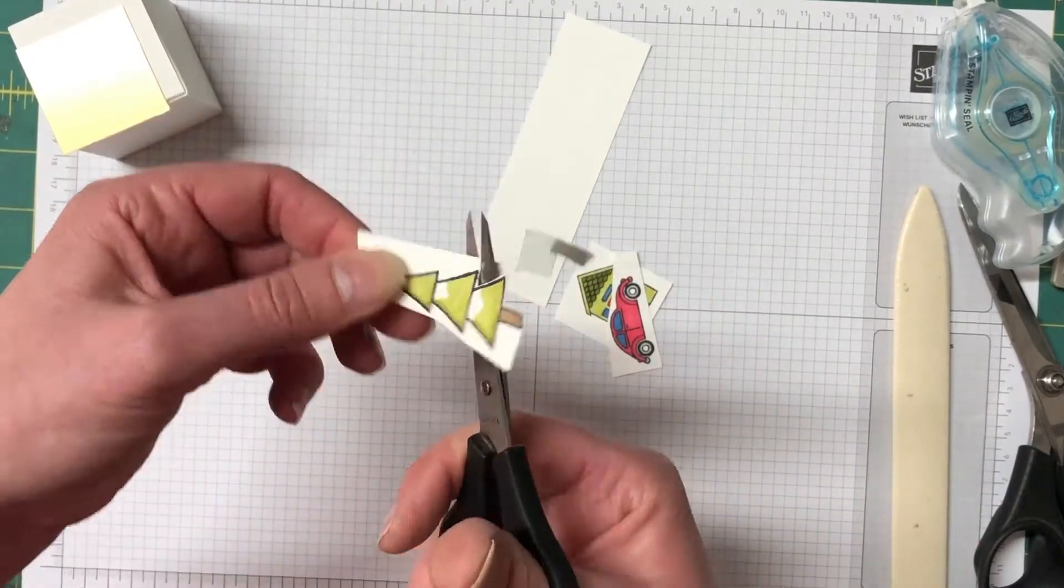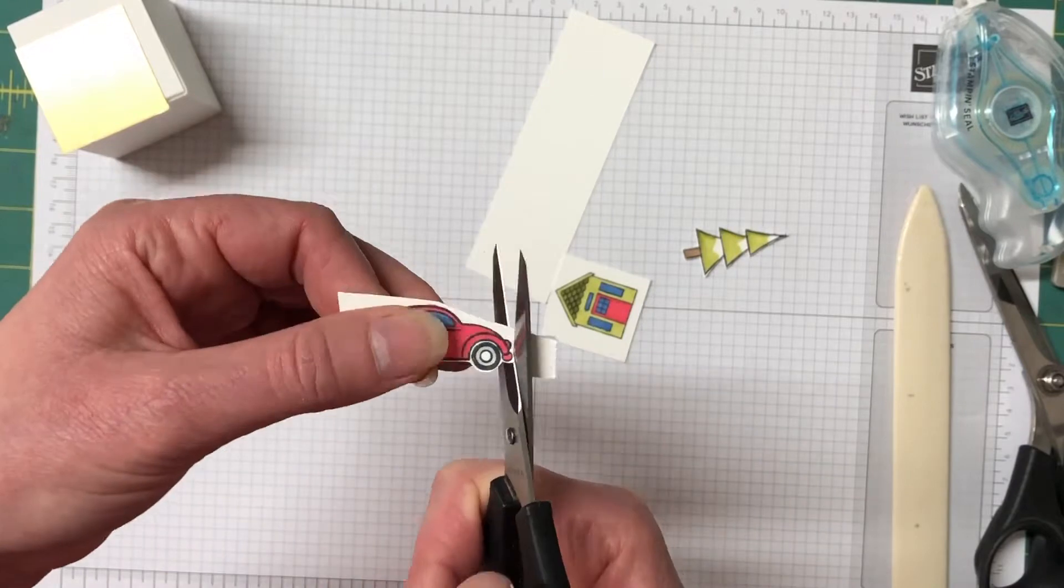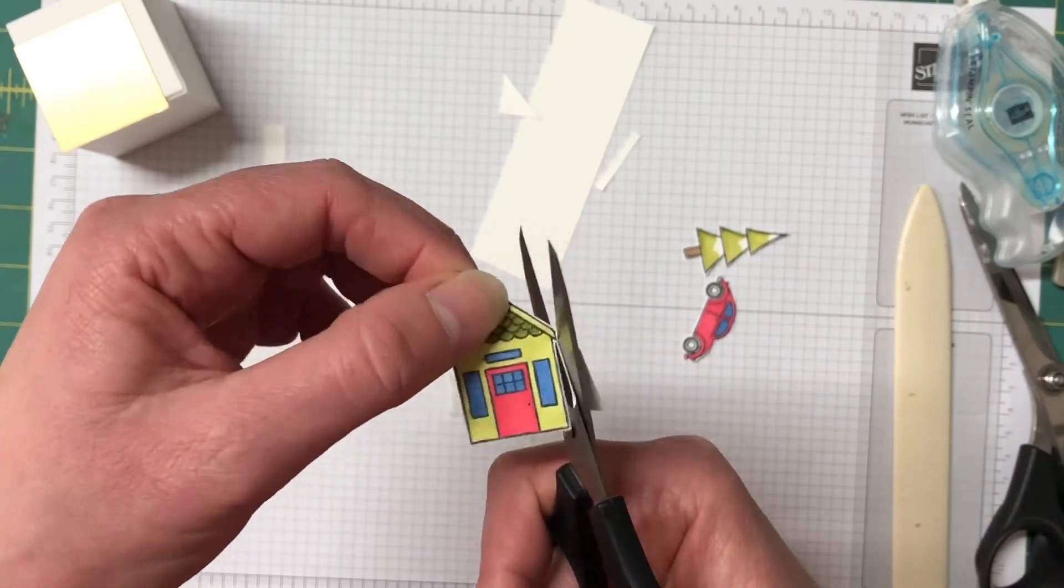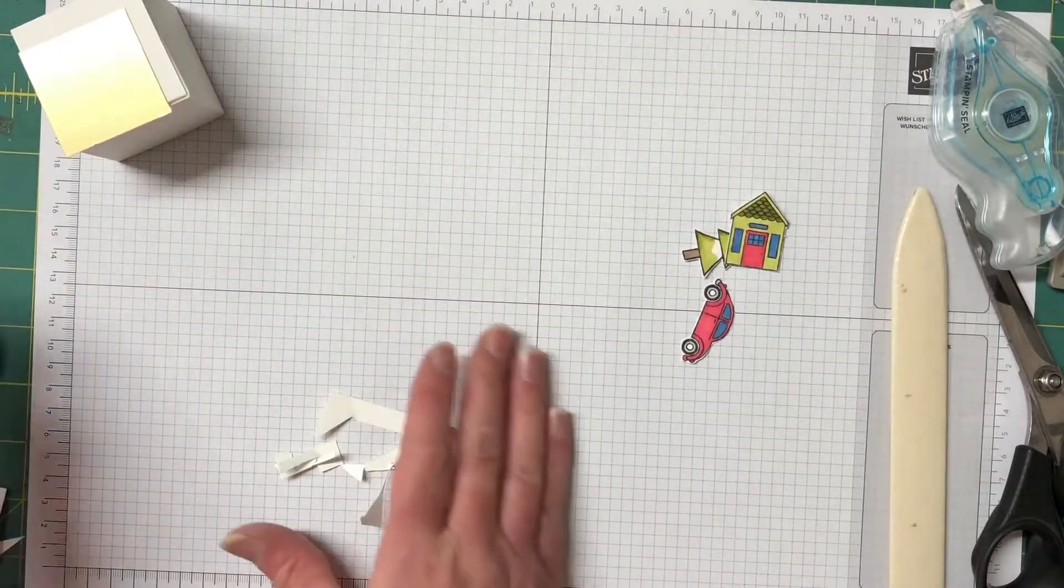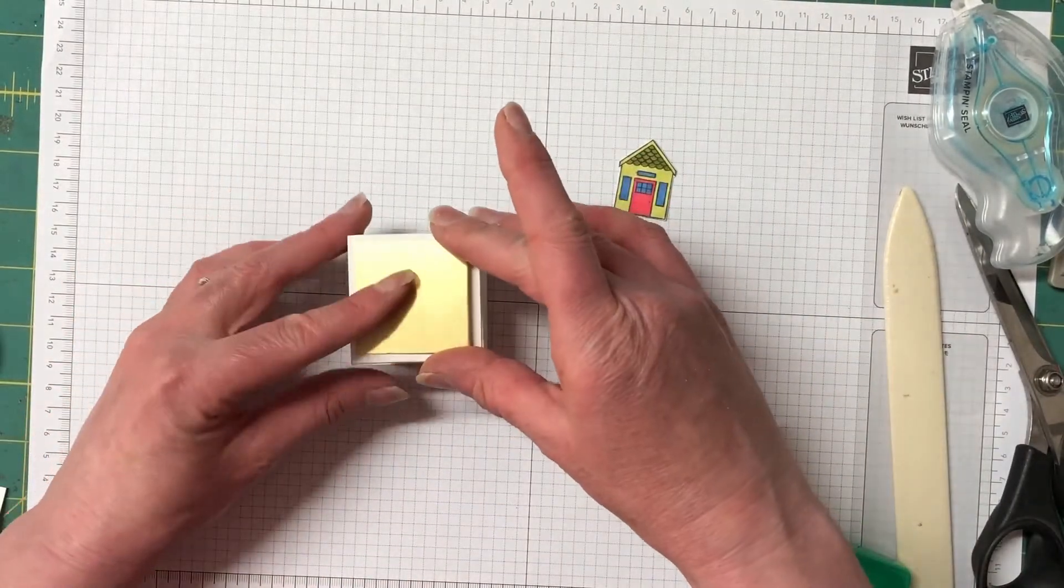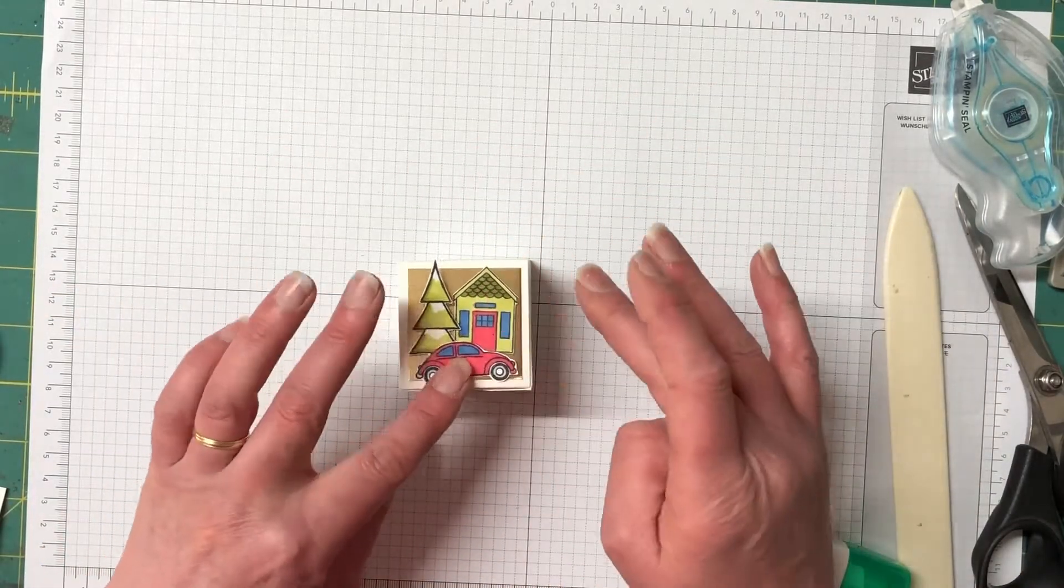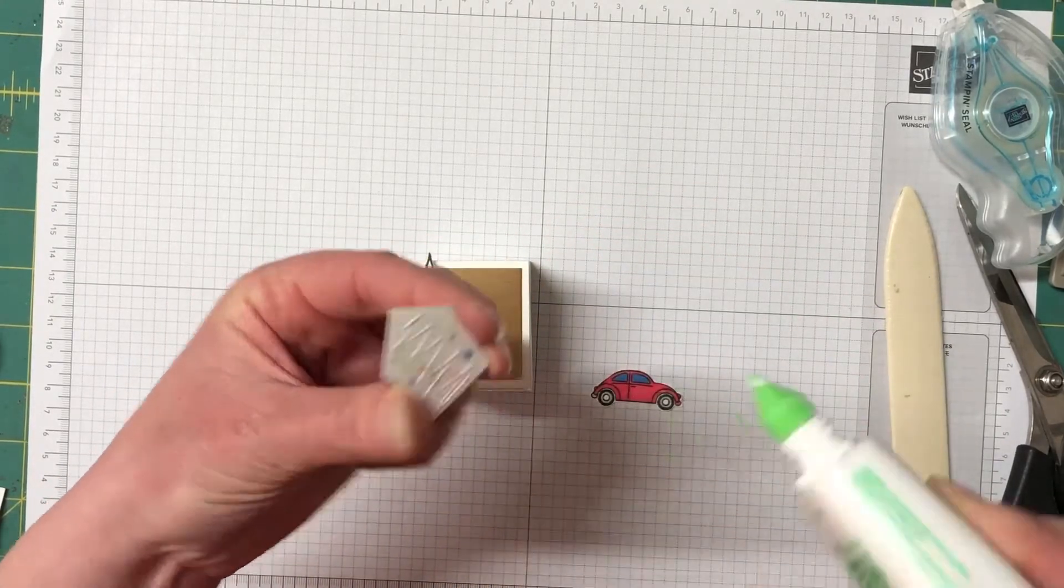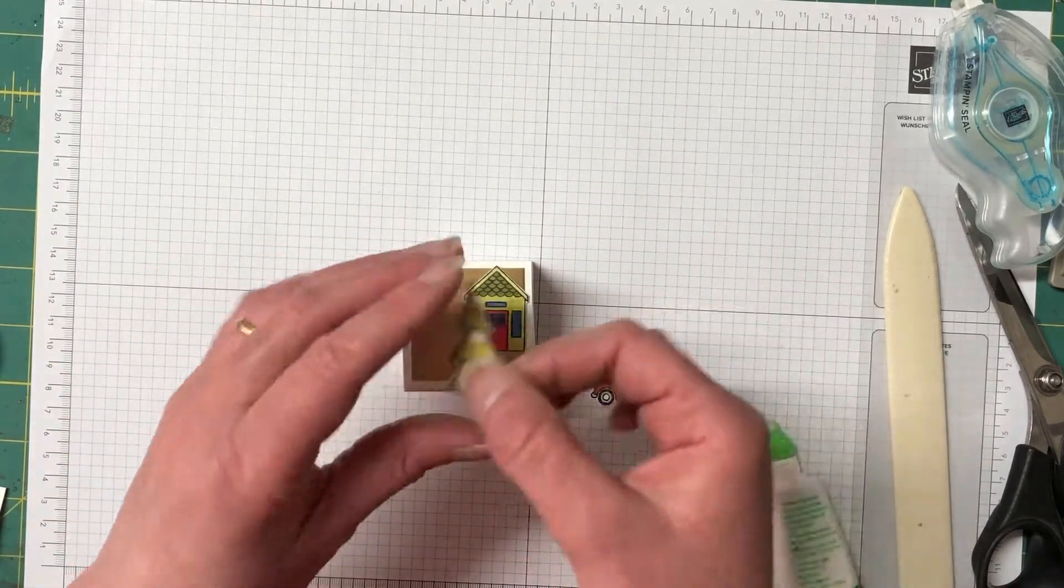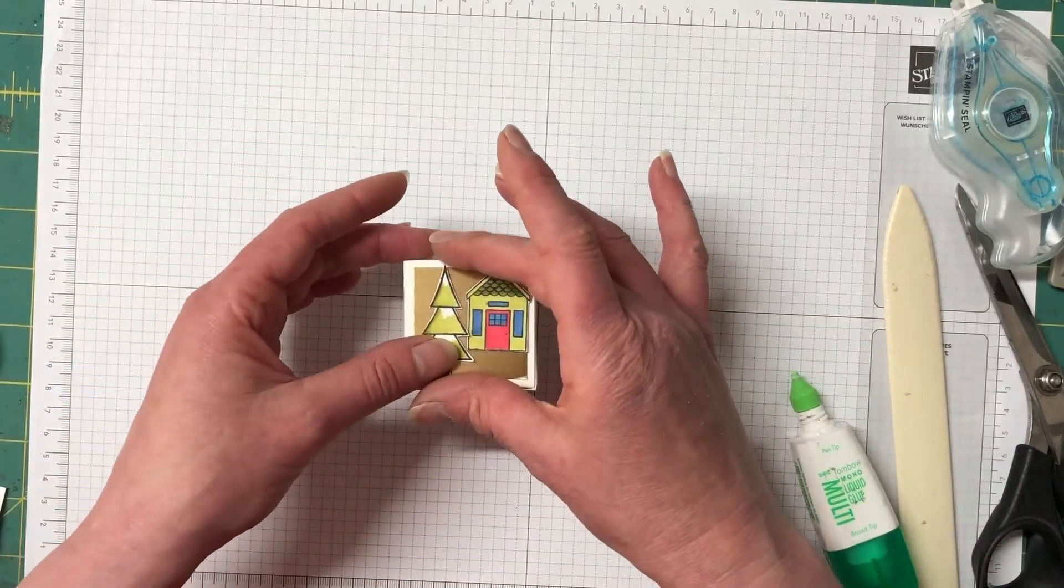I decided to do 25 boxes instead of 24. I find that when you're doing the opening of the boxes sometimes it can get confusing what you're up to so if we start at the first day of December and you open 25 and then go from that way you'll know how many days you've got left for Christmas. So I'm just going to pop these down using liquid adhesive so we have the tree the house and the car and I'm popping the number one on top of it and I've just kept it all one layer just gluing straight down on top of each other.